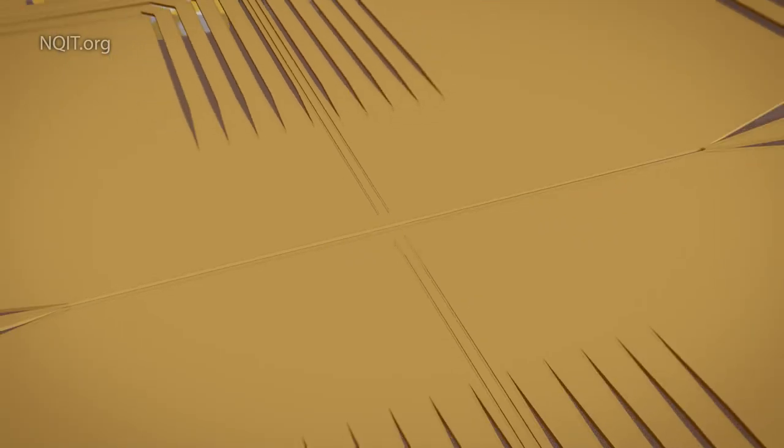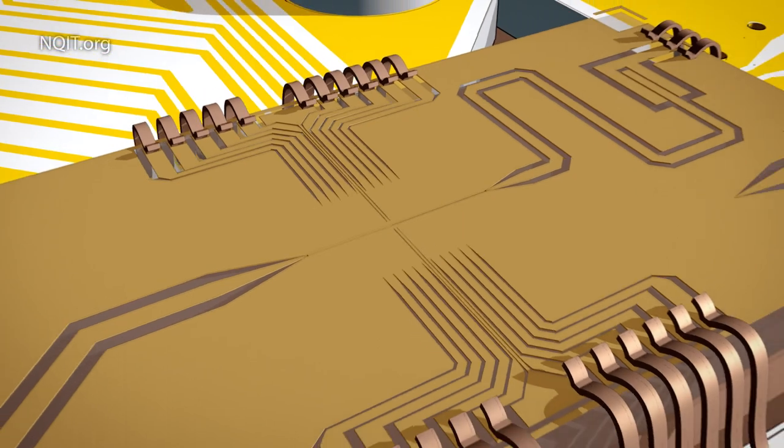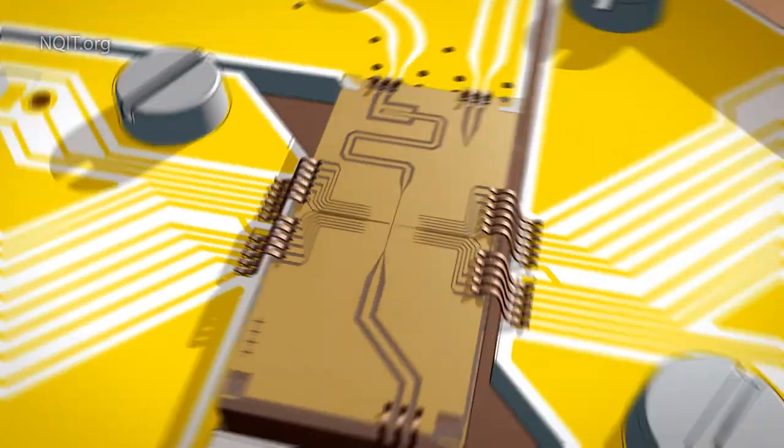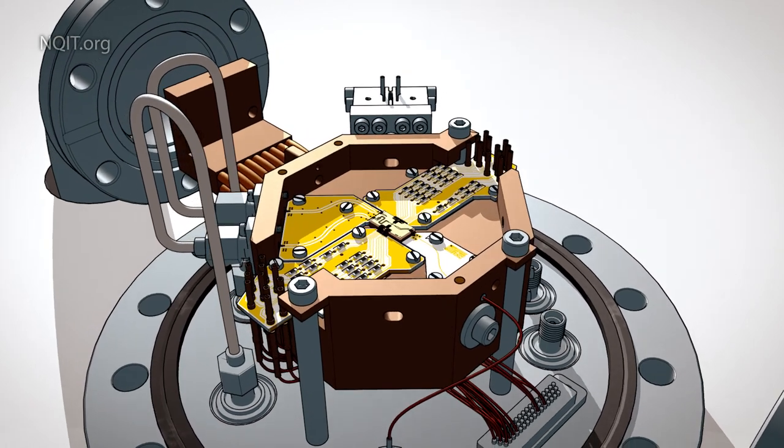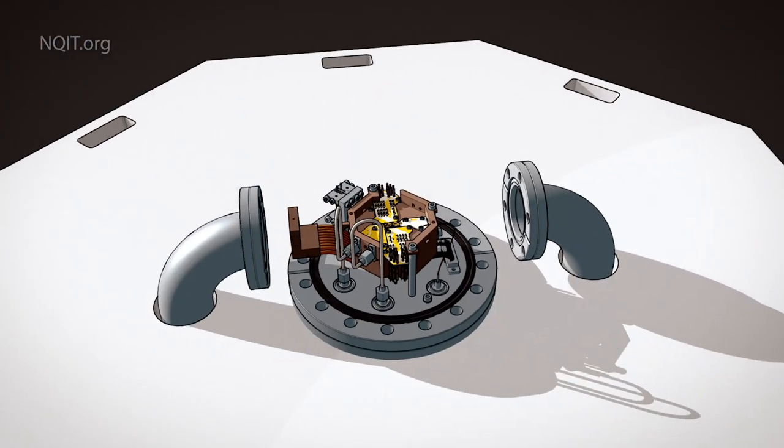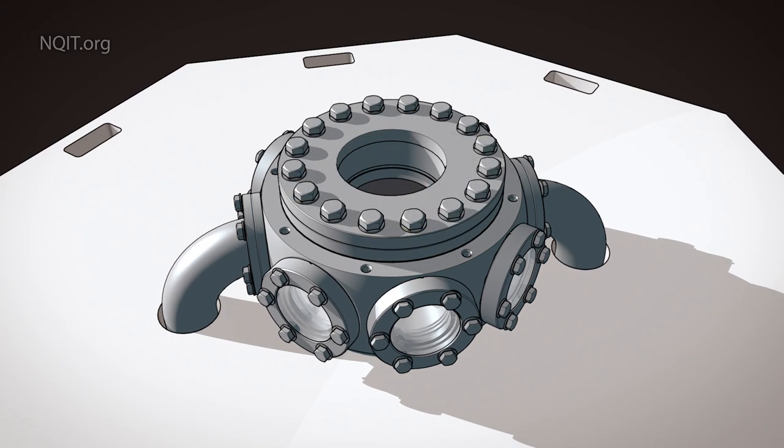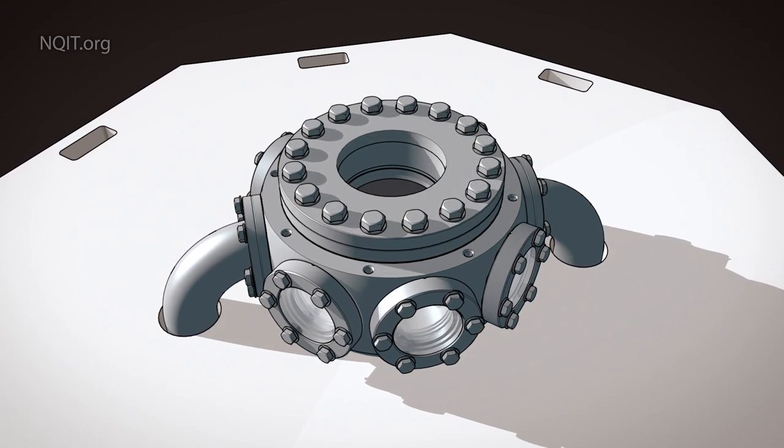Zooming out further, we see the gold strips are part of a small chip called an ion trap. And then we see surrounding electrical and cooling systems. A final zoom reveals the entire system is encased in a vacuum chamber which protects it from the atmosphere.